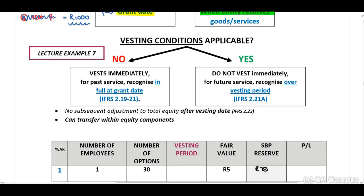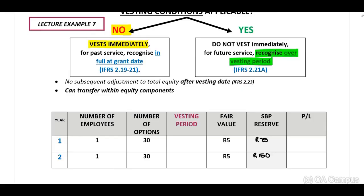Vesting conditions are extremely important. Ask yourself: is there a vesting condition applicable? If the answer is no, it vests immediately. If yes, you will have to recognize the expense over the vesting period. Use a table with columns for: number of employees, number of options or share appreciation rights, vesting period, value to be used, share-based payment reserve as a total, and profit and loss for each period.